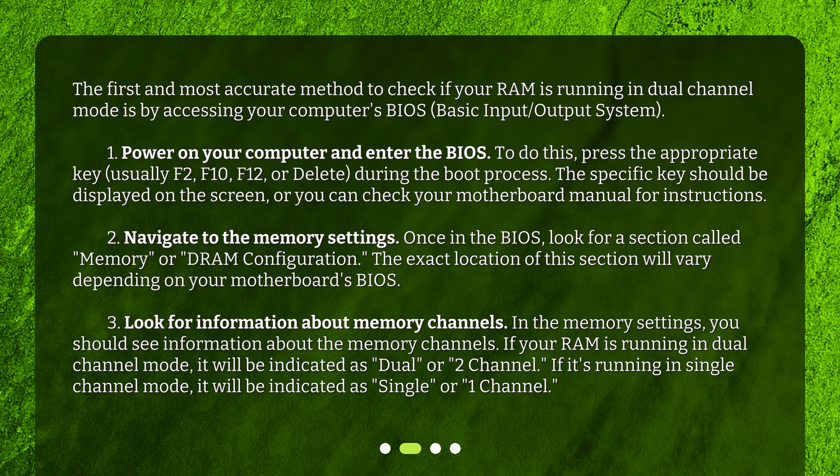Look for information about memory channels. In the memory settings, you should see information about the memory channels. If your RAM is running in dual channel mode, it will be indicated as Dual or Two Channel. If it's running in single channel mode, it will be indicated as Single or One Channel.